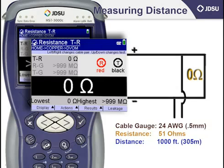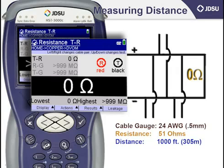DC signals will only take the path where there is continuity for them to take. So if I were to introduce a bridge tap between the meter and the short, and there is no fault on the bridge tap, the distance to the short would remain 1000 feet or 305 meters, and the bridge tap would have no effect. I could even put 10 bridge taps on, and as long as there was no continuity between tip and ring, no current would flow and the distance would still be accurate.